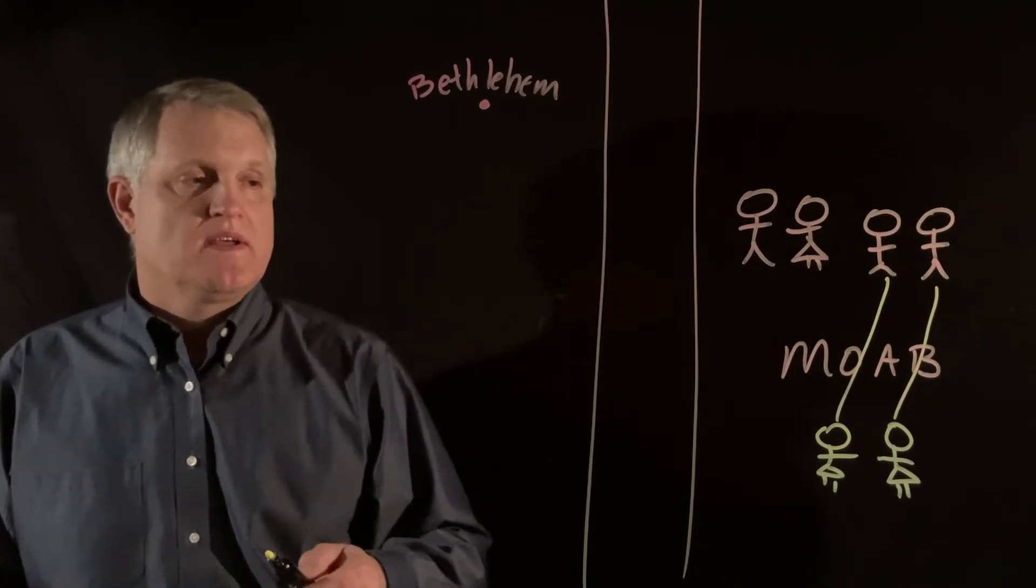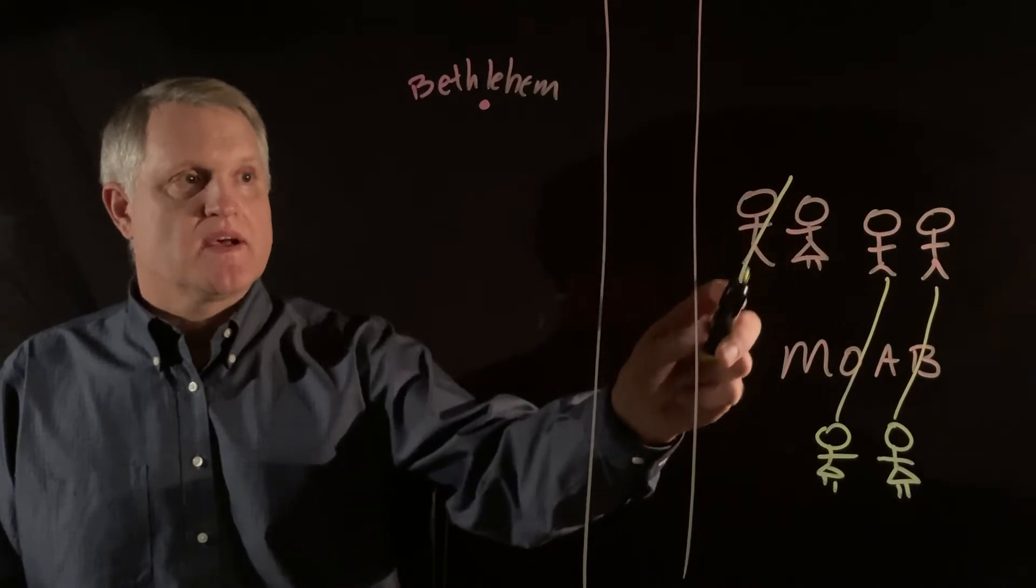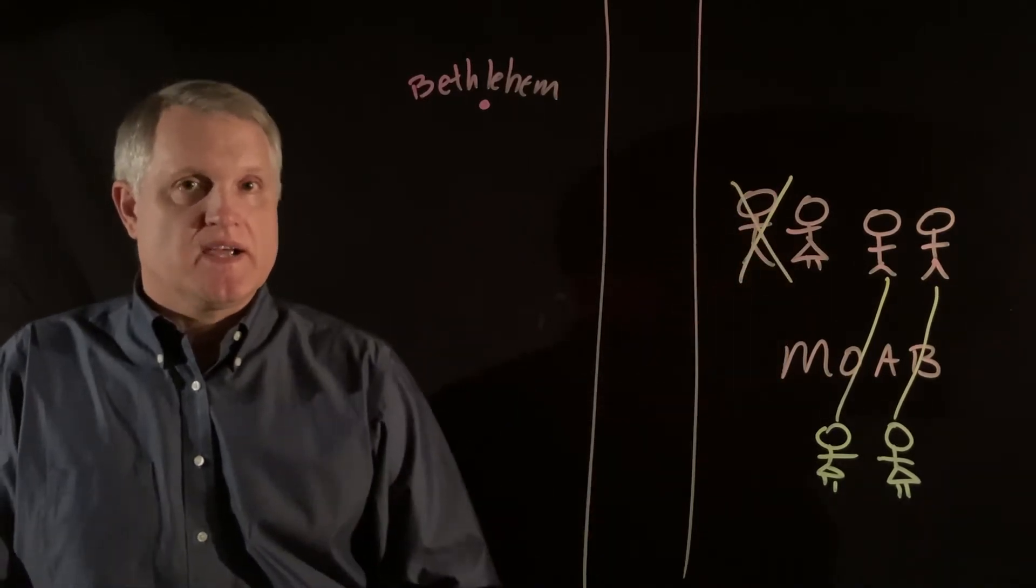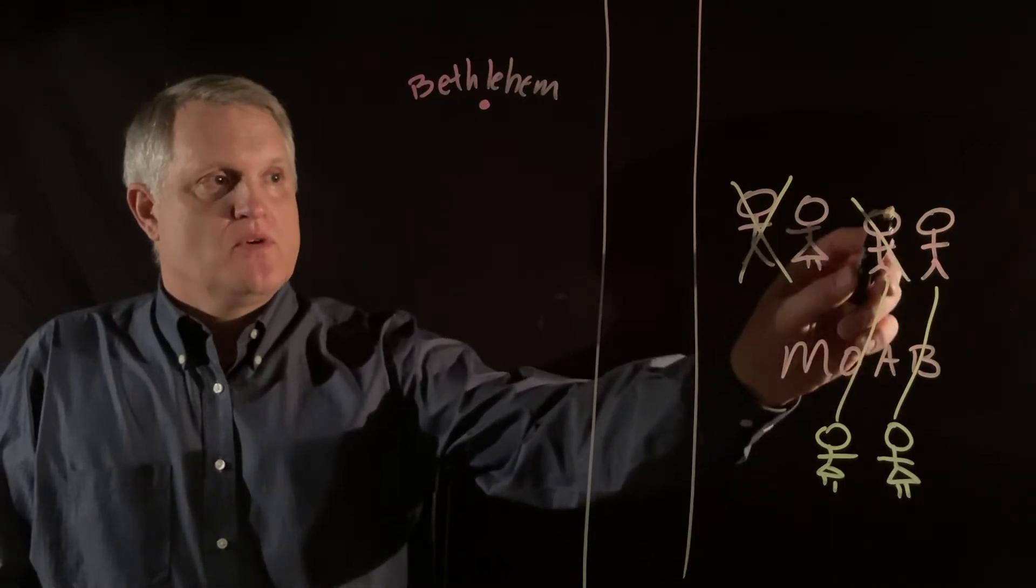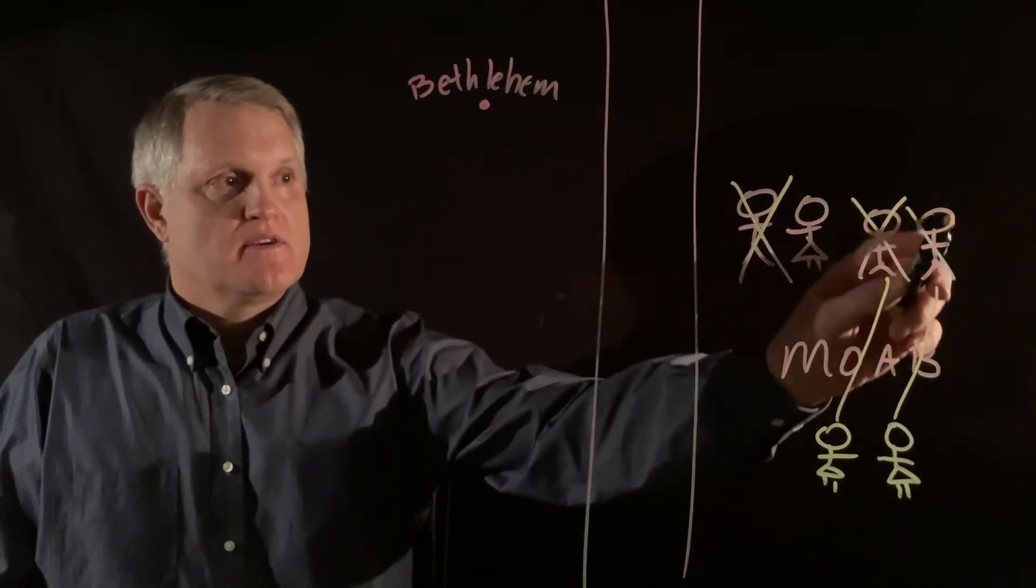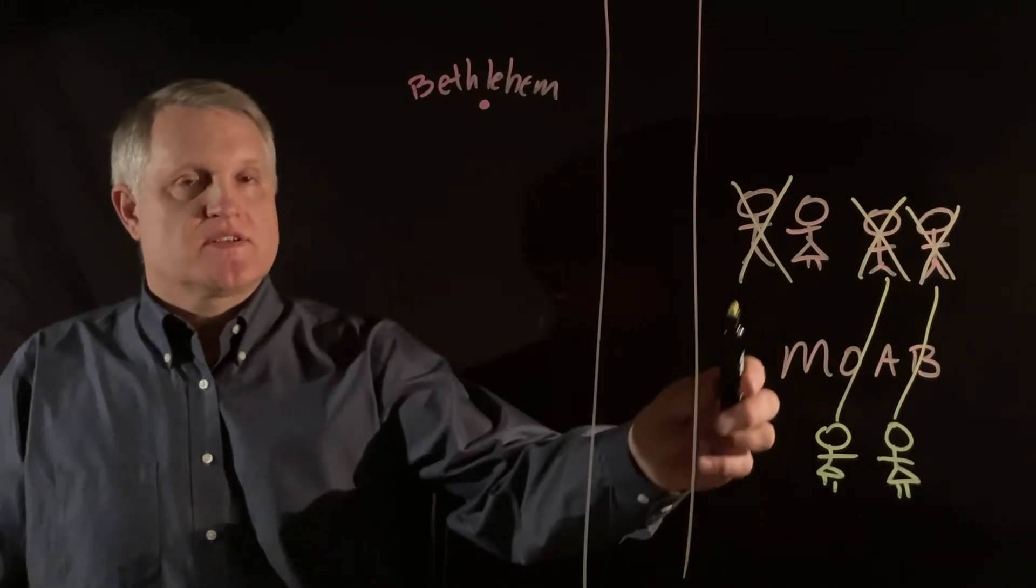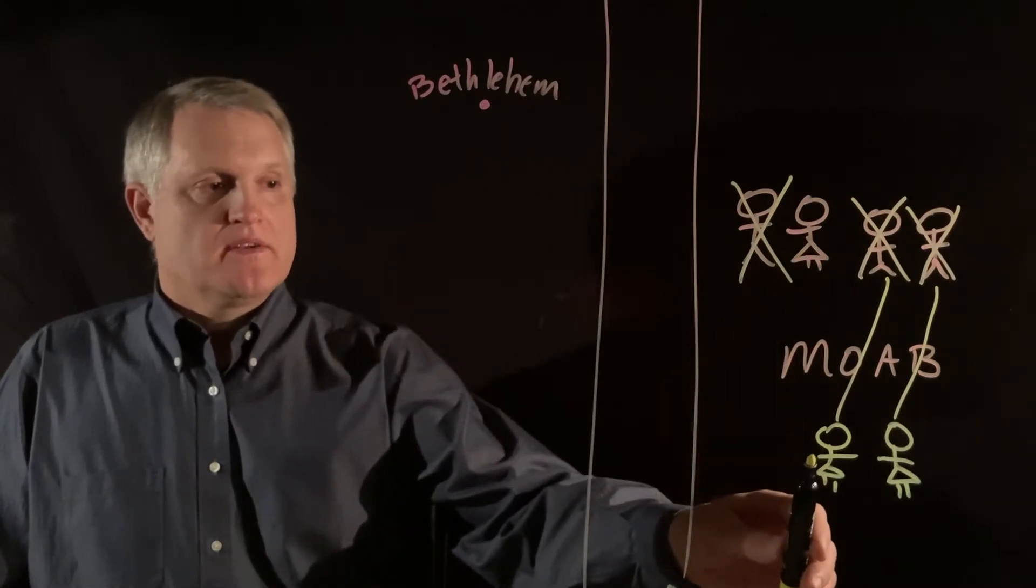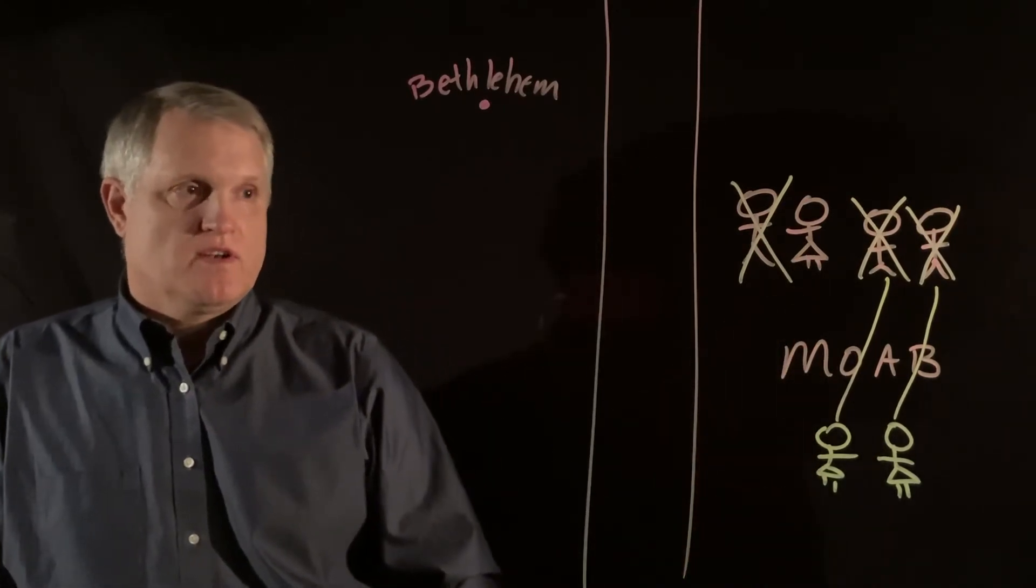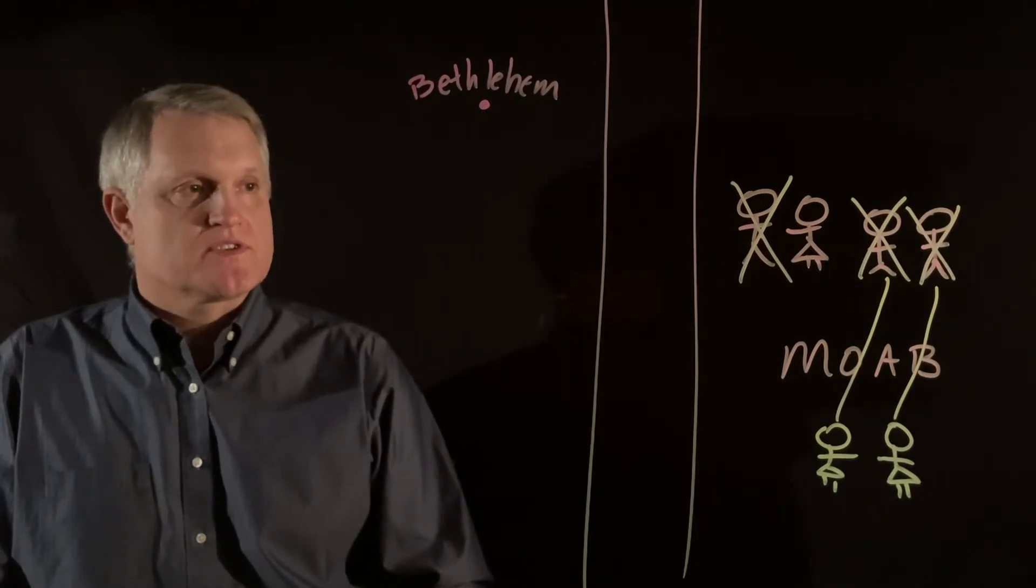What does happen, and is vital to the story, is that this man, the husband, unfortunately dies. His name is Elimelech. Well, even worse, these two boys, Kilion and Malon are their names, they die as well. And so what we have is three women, a wife and her two daughters-in-law are economically defenseless in this kind of a social situation.